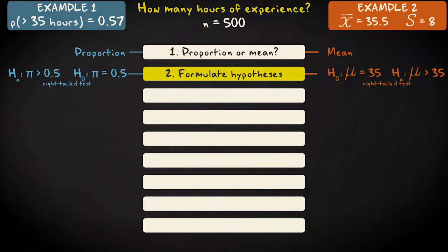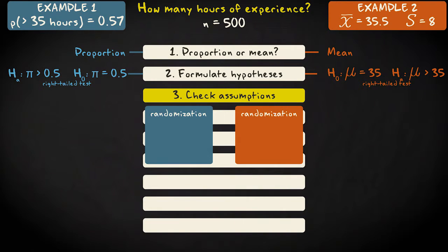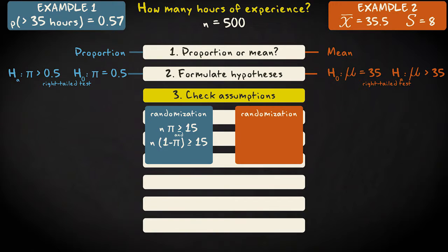Step 3: Check if your assumptions are met. In both cases, randomization is of essential importance — your data must have been collected by means of a random sample or a randomized experiment. In the case of a proportion, an additional assumption is that the product of your sample size and the population proportion according to your null hypothesis, and the product of your sample size and one minus that proportion, must both be equal to or larger than 15.